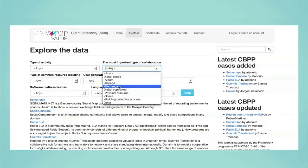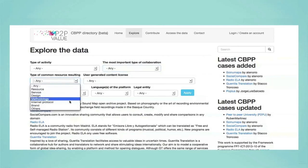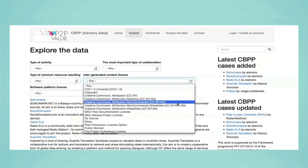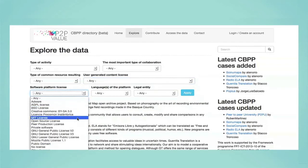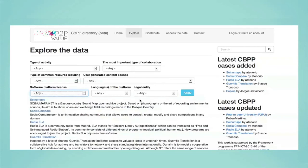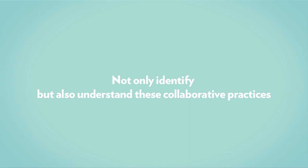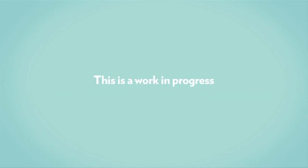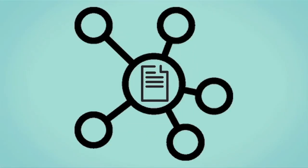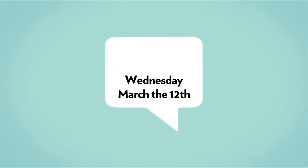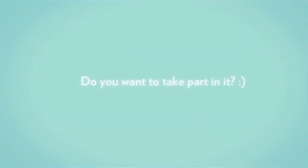Now you can explore all the data, filtering the contents using all the taxonomies included on the form — very valuable information that easily allows us to link one initiative to another, and offers the chance to know a lot about CBPP practices and better understand these ways of producing collaboratively, which are already taking place in our present and will shape our future. This is a work in progress, and we will learn together how to better understand these new forms of collaboration. On Wednesday, March 12th, P2PValue will launch the Directory and host a P2PValue Data Jam — a collective effort to populate the directory and document as many examples of CBPP as possible. Do you want to take part in it?